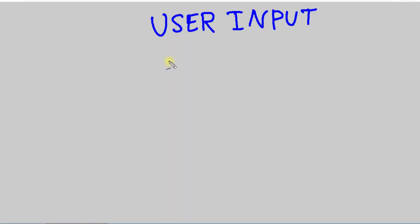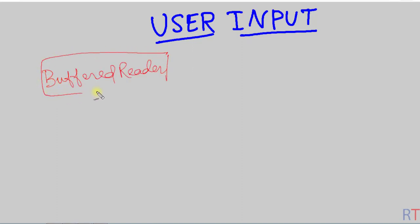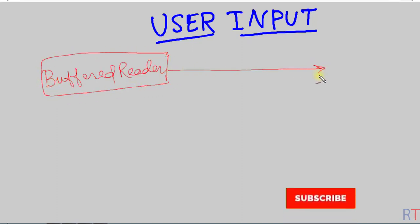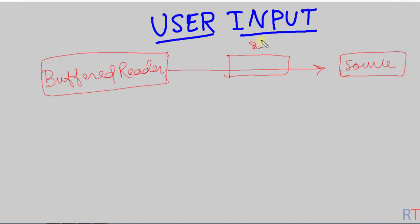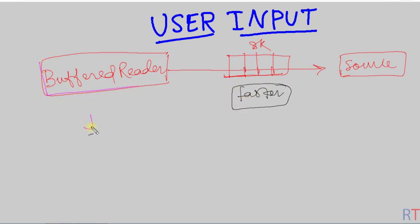In this video we are going to talk about how we can take user inputs in Java using the BufferedReader class. The BufferedReader class is used to take input from a source, and unlike the Scanner class, it uses one 8KB buffer to buffer the input stream, which makes it a lot faster than the Scanner class.